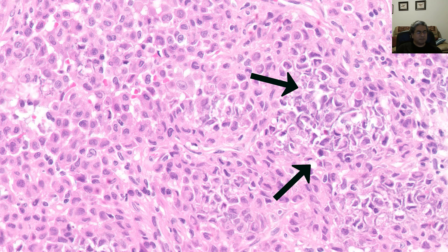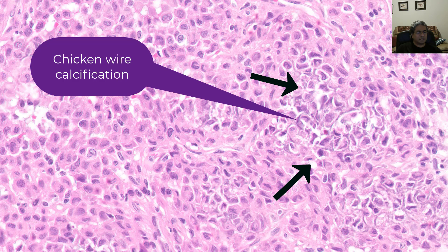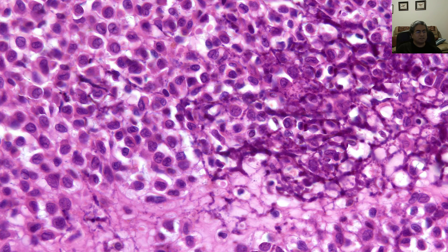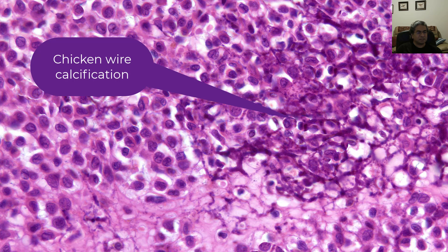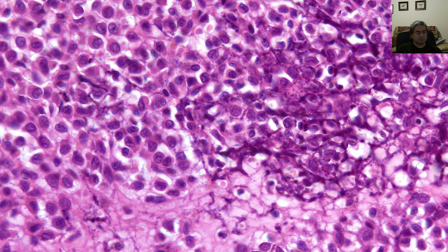Down here there's a bit of calcification — this is the so-called chicken-wire calcification. You may see it, you may not see it. But if you do, you're lucky. If you don't, the cells will give you the answer. And if you're really lucky and you've said your prayers at night, you will see classic chicken-wire calcification: calcification that surrounds the individual neoplastic cells.